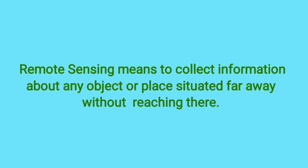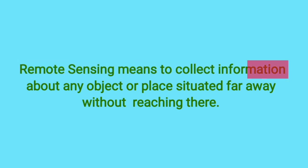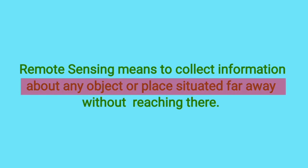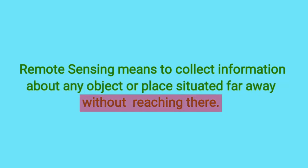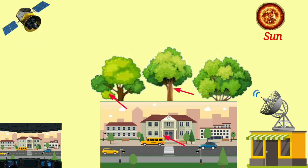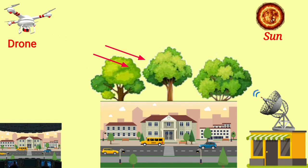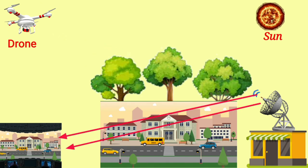Remote sensing means collecting information about any object or place situated far away without reaching there. This information or data is collected by remote sensors, which can be on satellites or aircraft.